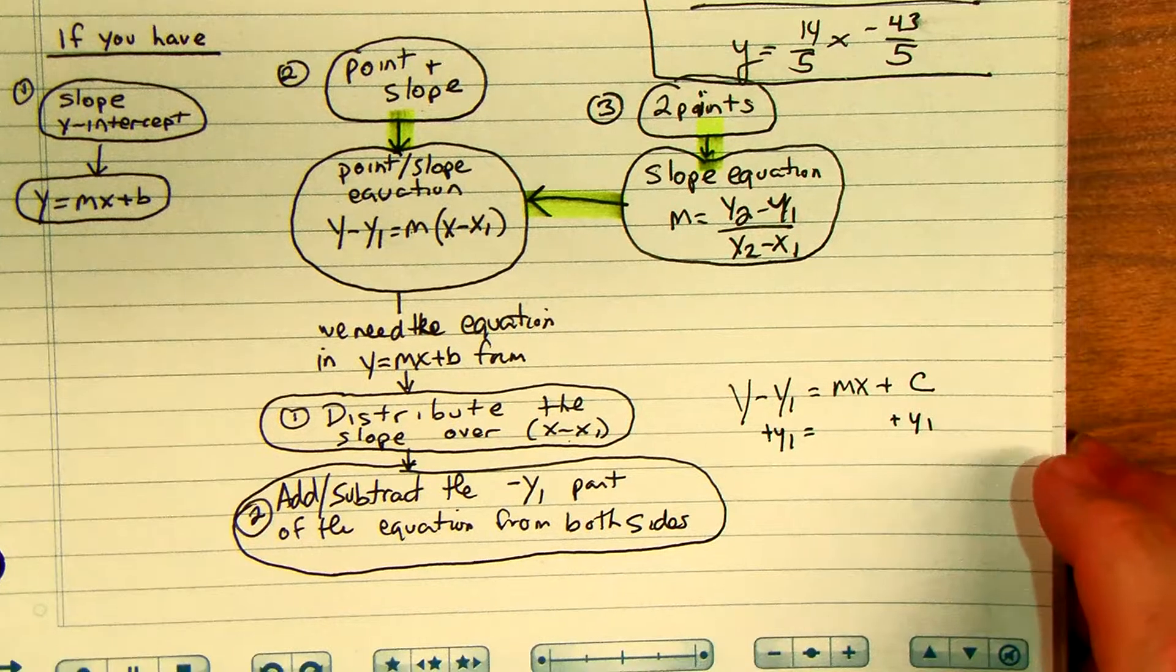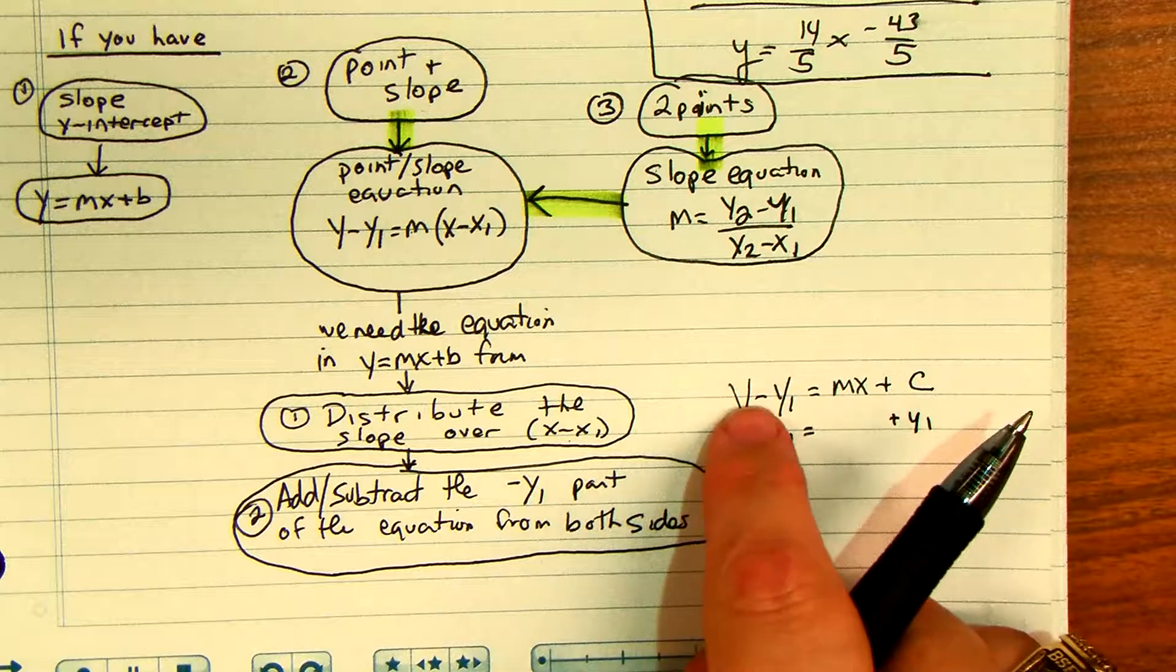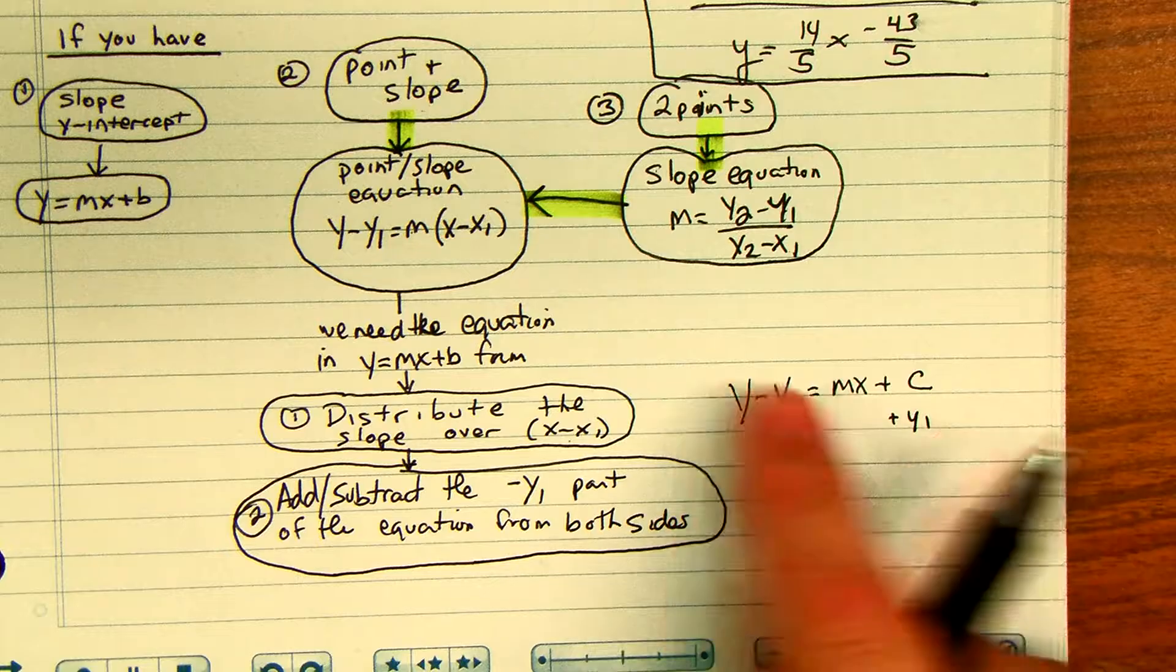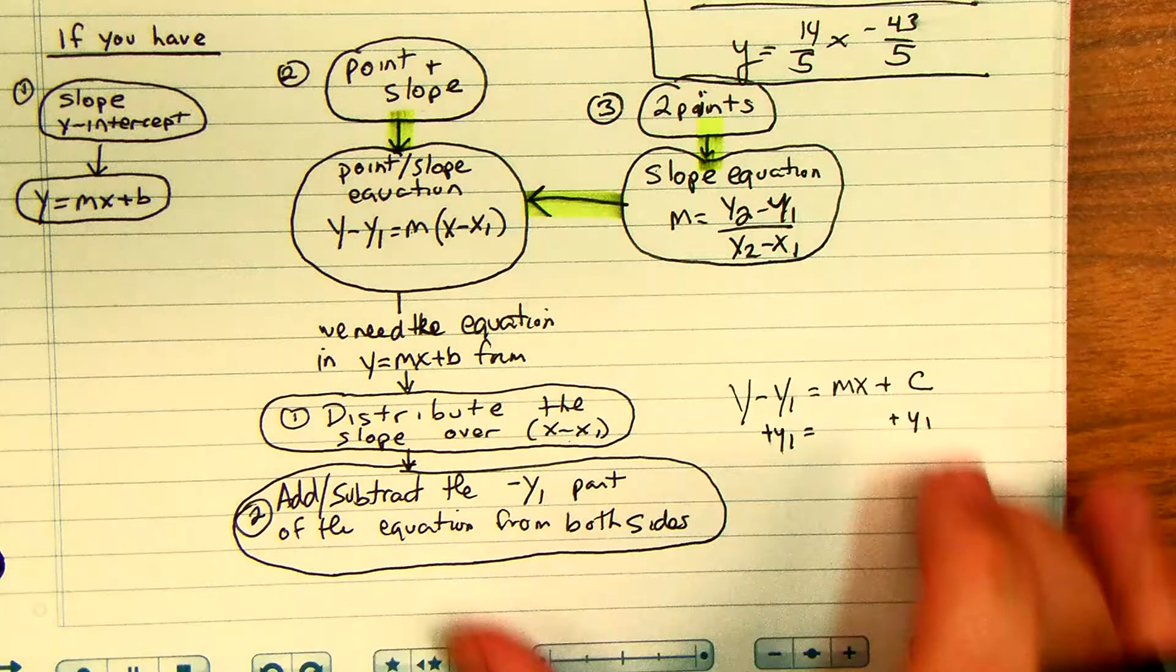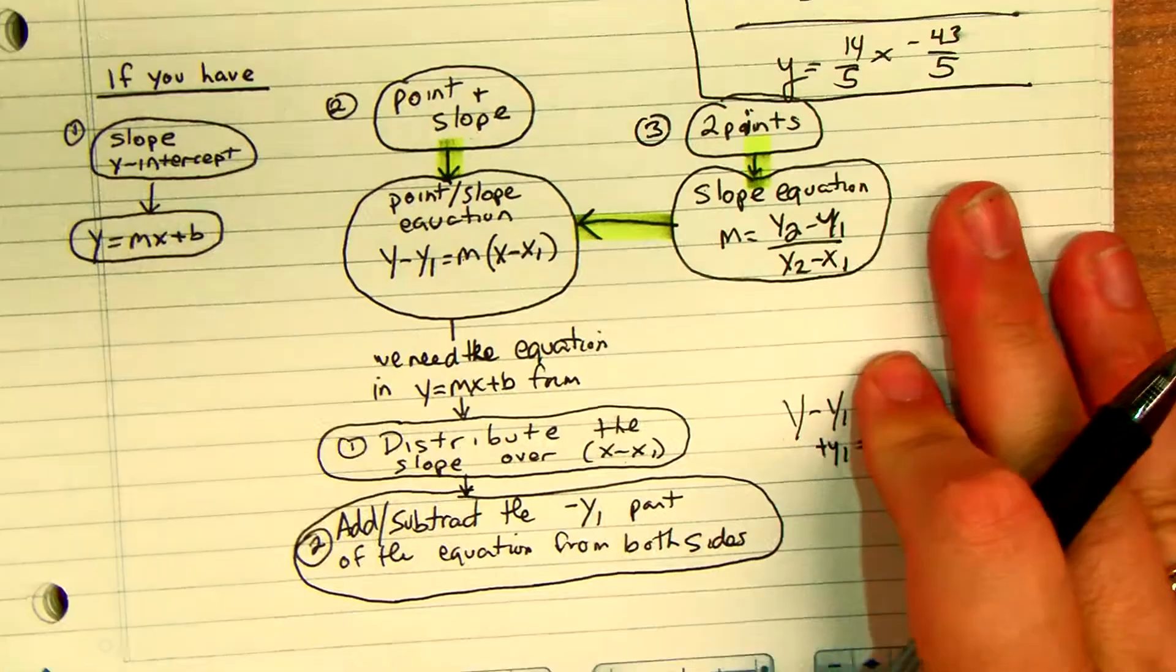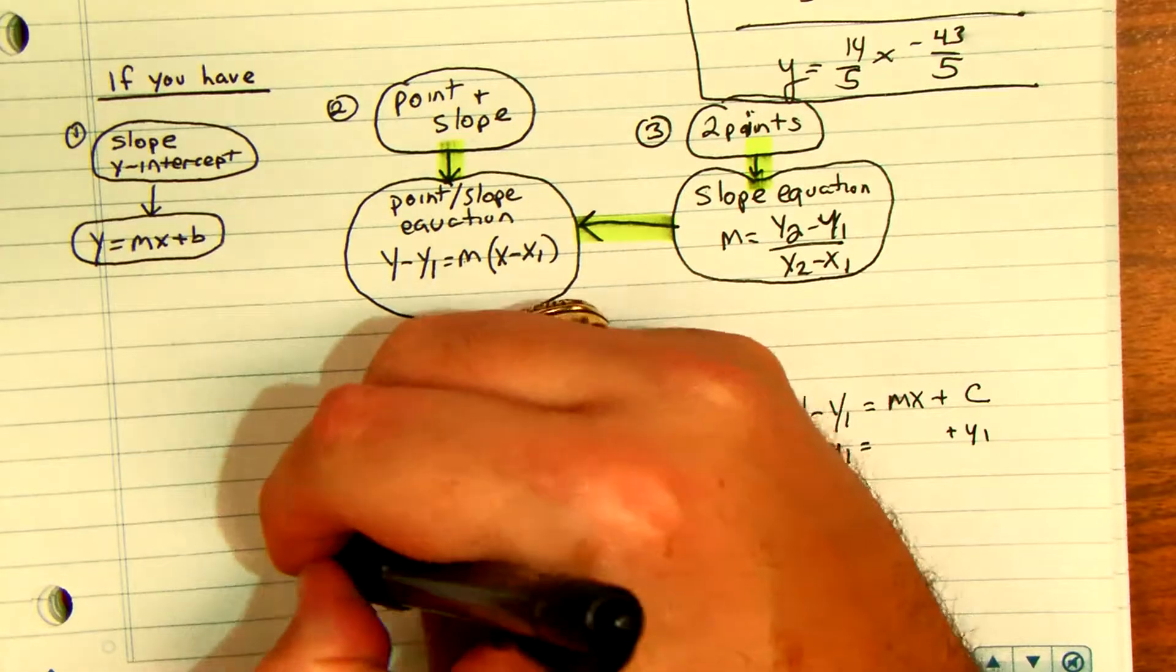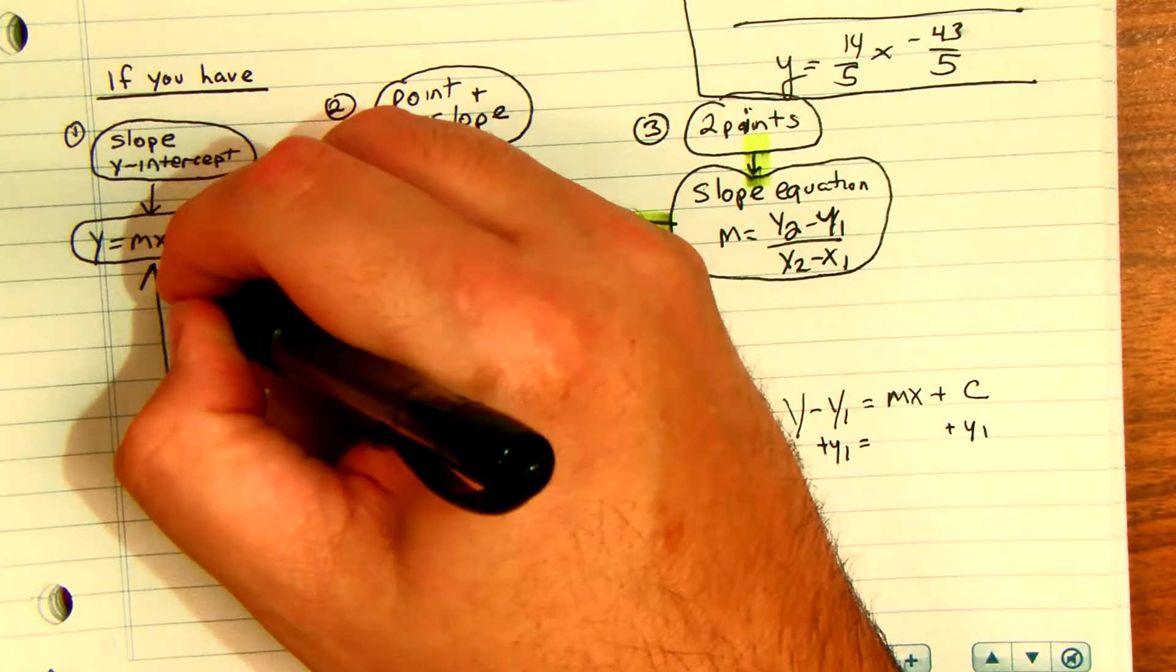Now, if that ended up being negative you'd subtract the number from both sides. If it ended up being positive you add it to both sides. Then you just go ahead and add those equations up, and that's going to give you y equals mx plus b.